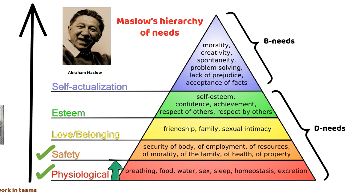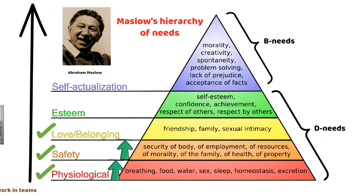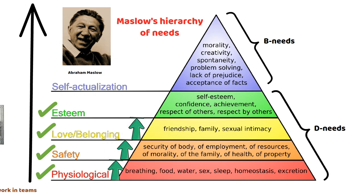Number three: social needs. After physiological and safety needs are satisfied, people desire a sense of belonging and social connection. This includes the need for love, friendship, intimacy, and acceptance within social groups such as family, friends, and communities. Number four: esteem needs. Once social needs are fulfilled, individuals strive for recognition, self-esteem, and a positive evaluation of their abilities and accomplishments. This includes both external factors such as achievements and respect from others, as well as internal factors such as self-confidence and self-respect.